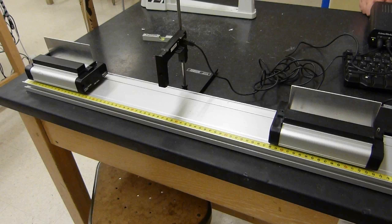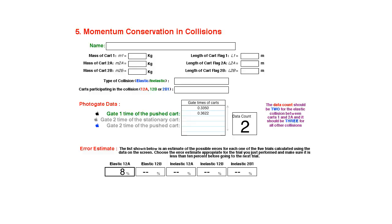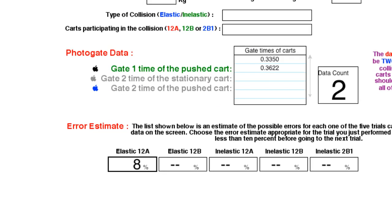There are six possible combinations of collisions, and we'll do five of them. First, we'll do equal masses elastic. You'll get two times, since the push cart stops. You'll want a percent error of 10% or less.